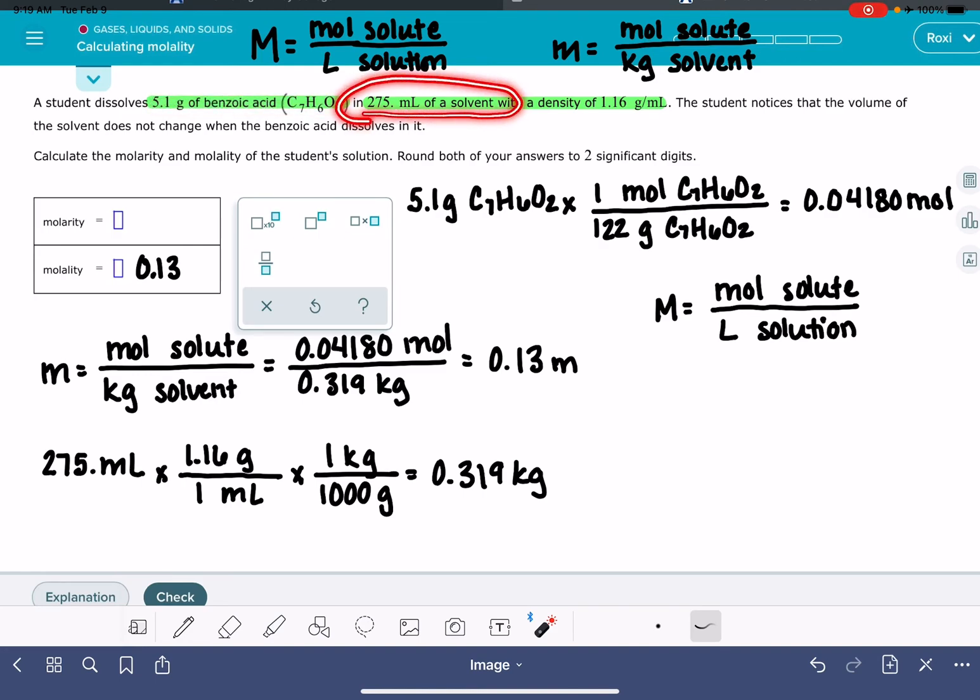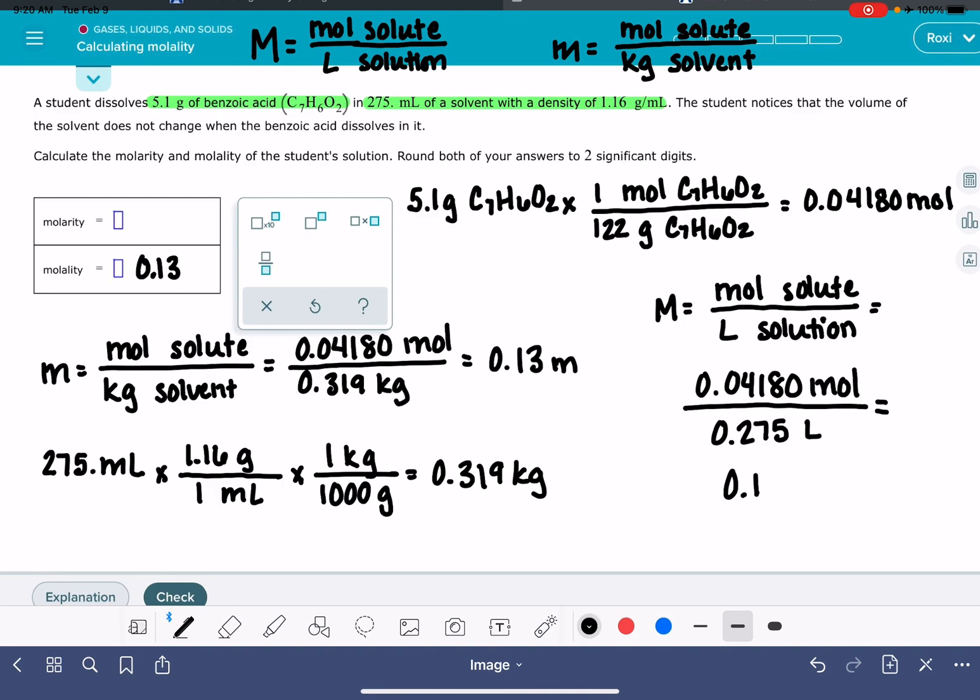So we can use the volume of the solvent as the volume of the solution. So our moles of solute, 0.04180, and the volume of the solution we're assuming or approximating is 0.275 liters. 0.0418 divided by 0.275. And that is a molarity of 0.152, big M, to two significant figures, 0.15.